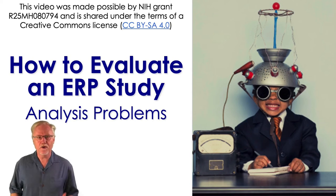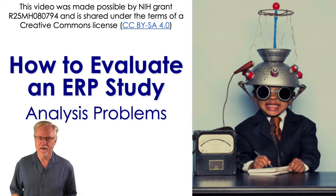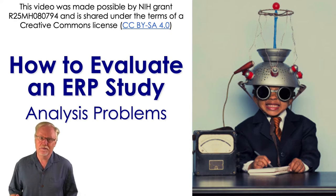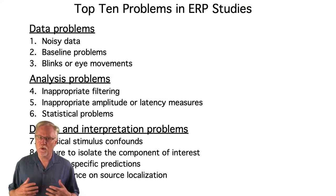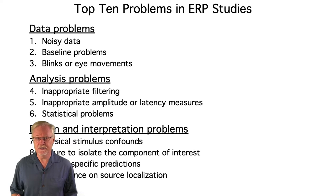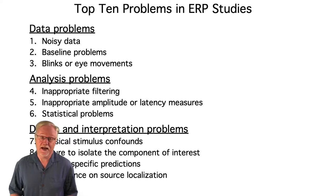In this video, I'm going to go through the most common problems I find in how people analyze their ERP data. There are a million ways to analyze ERP data and a million ways to make mistakes, but I'm going to focus on inappropriate filtering, problems with quantifying the amplitudes and latencies of the ERP components, and statistical problems. These are the most common analysis problems that I see.